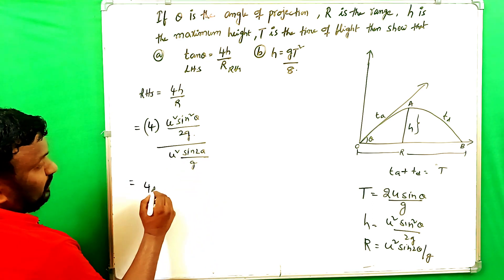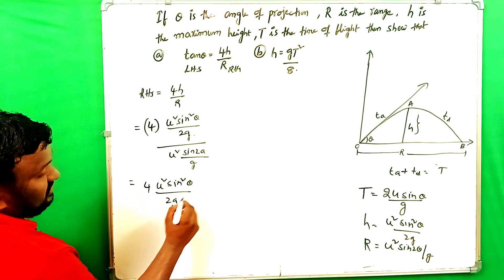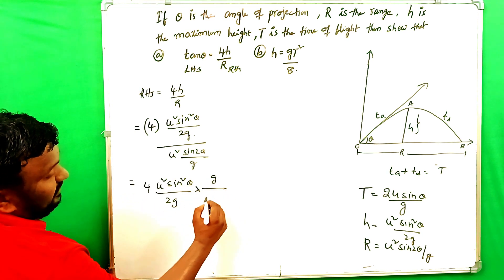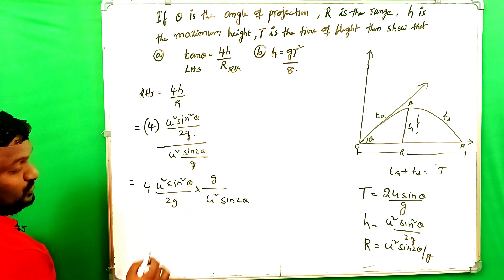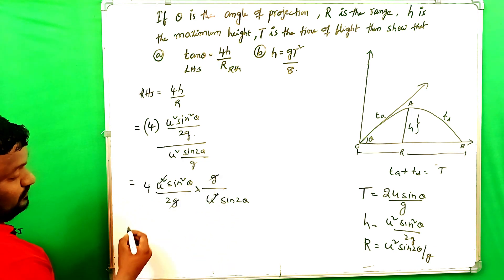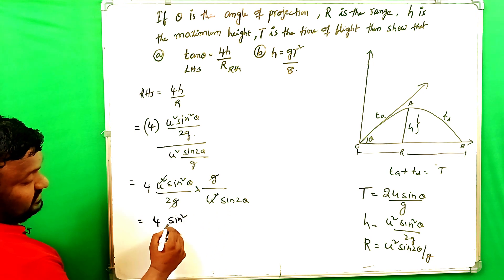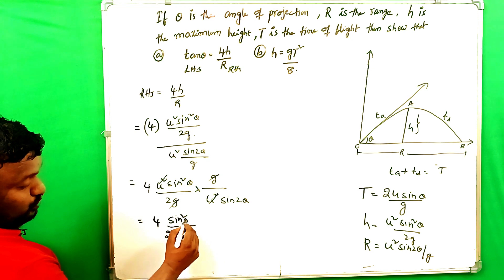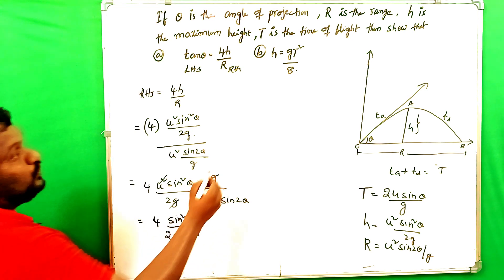This is 4 into u squared sin squared theta by 2g and g by u squared sin 2 theta. U squared u squared cancel. And g, g cancel. Then what you have? 4 into sin squared theta by 2 into sin 2 theta.